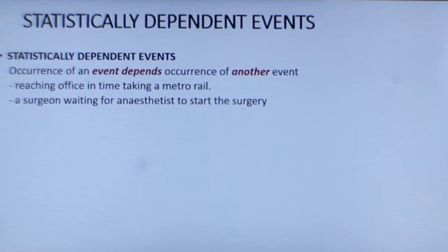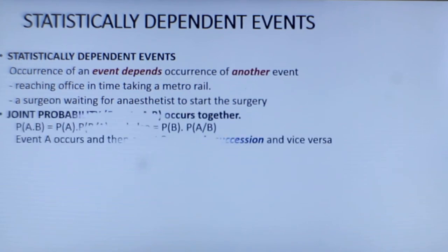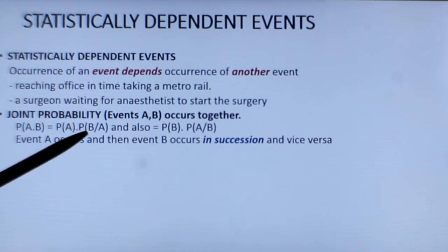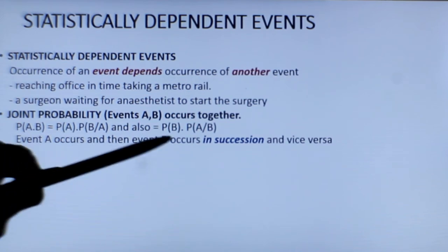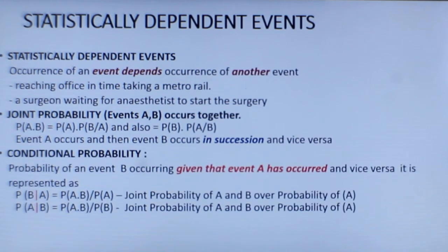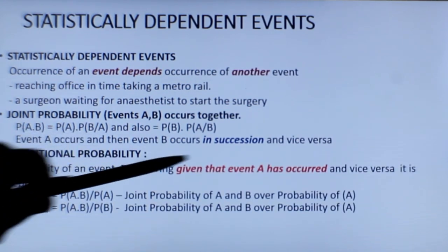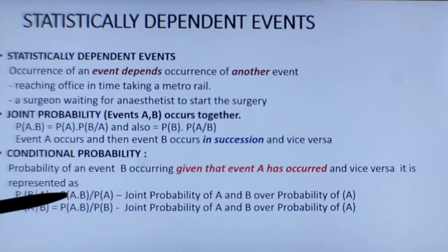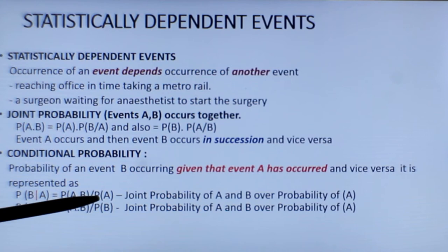We need to understand probabilities under this situation. There are two things: one is joint probability, another one is conditional probability. The joint probability of A and B occurring is given by probability of A multiplied by probability of B given A has occurred — meaning event A and event B are occurring in succession. In conditional probability, given that event B has occurred, the probability of A occurring is represented as P(A|B), which equals the joint probability of A and B over probability of B, and vice versa.